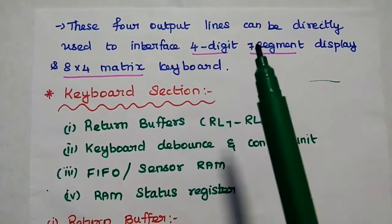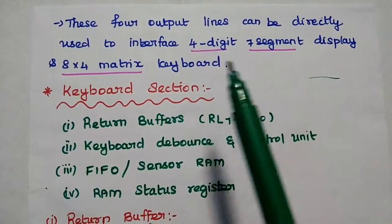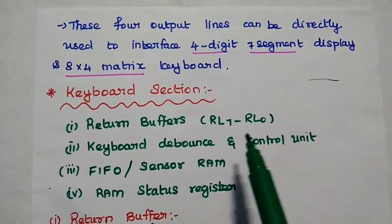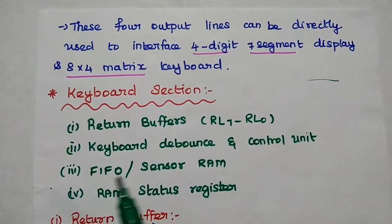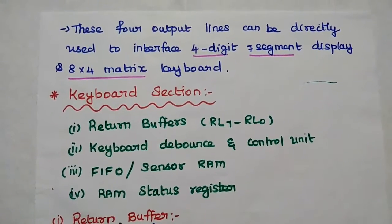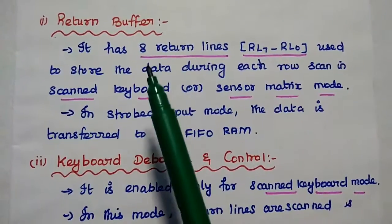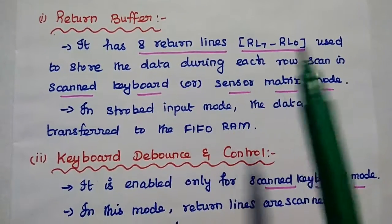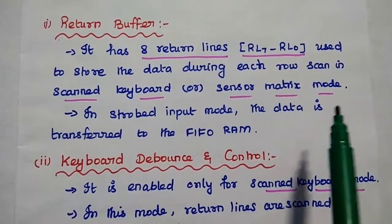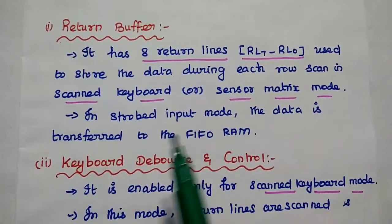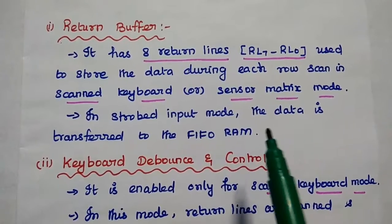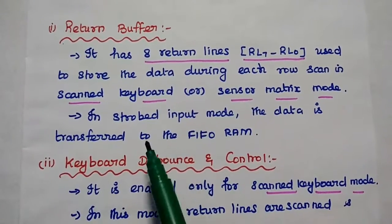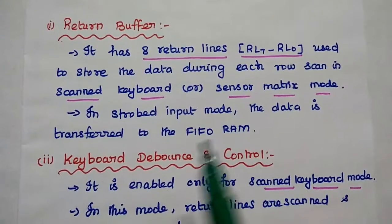The keyboard section has 4 units: the return buffer with 8 return lines RL0 to RL7, keyboard debounce and control unit, FIFO or sensor RAM, and status register. The return buffer has 8 return lines used to store the data during each row scan in scanned keyboard or sensor matrix mode. In strobed input mode, the data is transferred to the FIFO RAM.